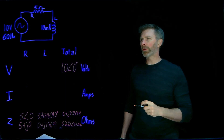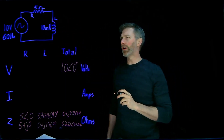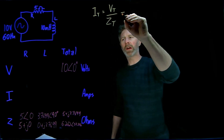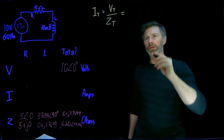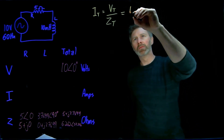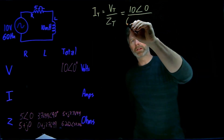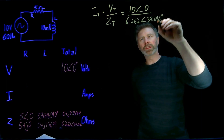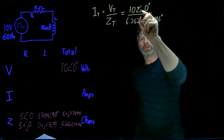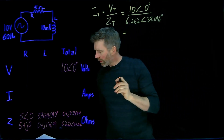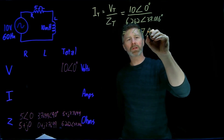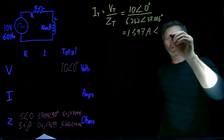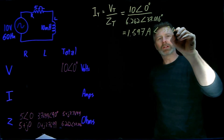The next thing we're going to do is calculate the current. This is a series circuit, so the current is going to be the same for all devices, and that current will be equal to the total voltage divided by the total impedance. We have those two numbers in polar notation, so we'll use that because it's much easier to divide in polar notation. 10 volts with a phase angle of 0 divided by 6.262 ohms with a phase angle of 37.016 degrees. We divide the magnitudes and get 1.597 amps, and subtract the phase angles to get negative 37.016 degrees.